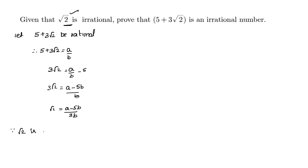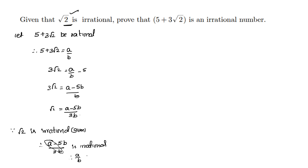Since root 2 is irrational, and root 2 is equal to A minus 5B by 3B, therefore A minus 5B by 3B is irrational. But A by B here represents 5 plus 3 root 2, so therefore 5 plus 3 root 2 is irrational.